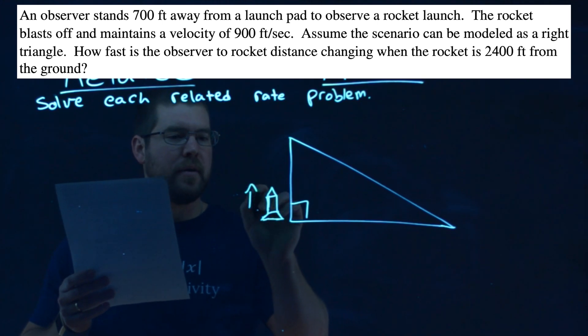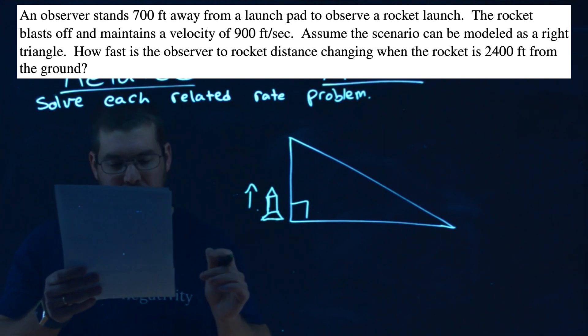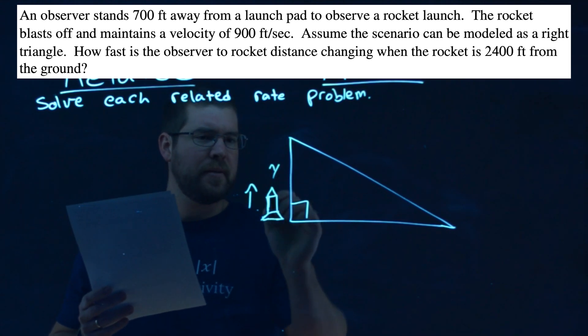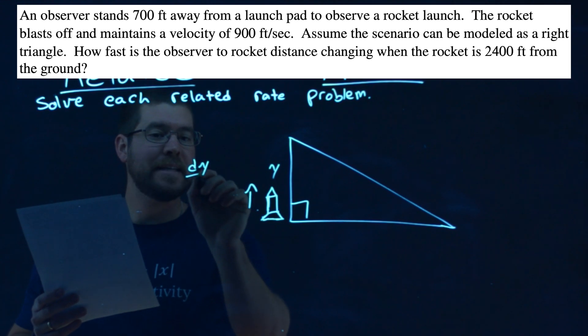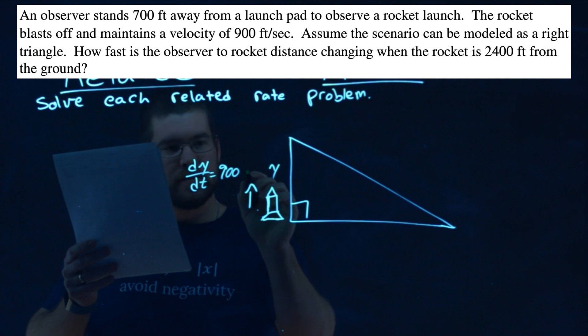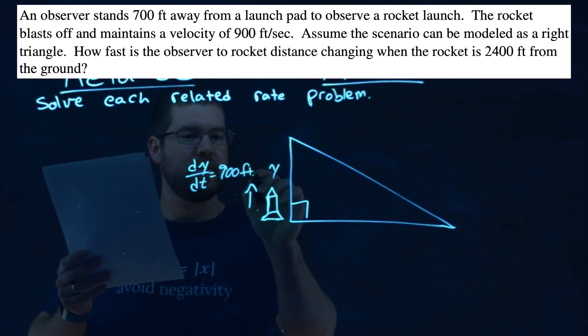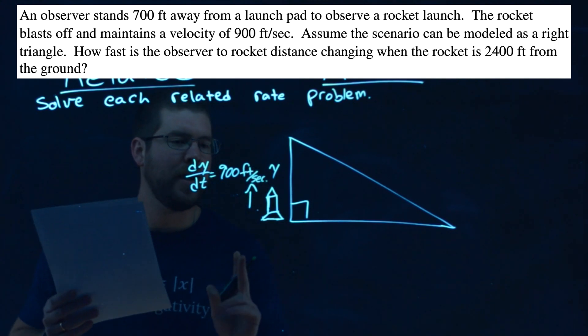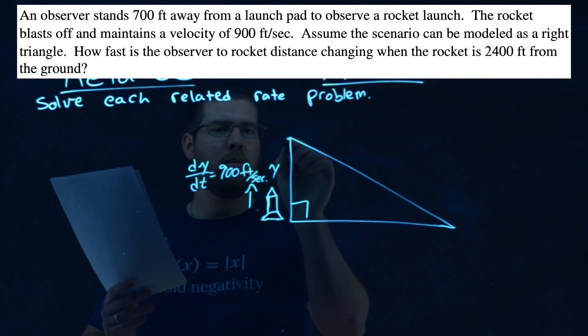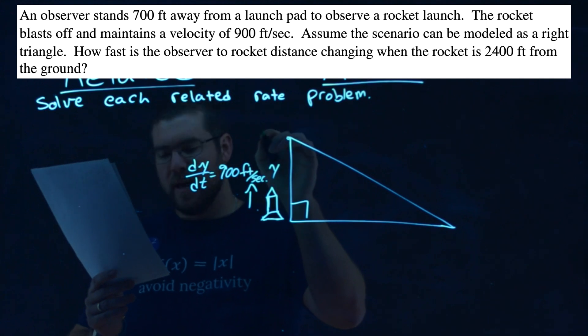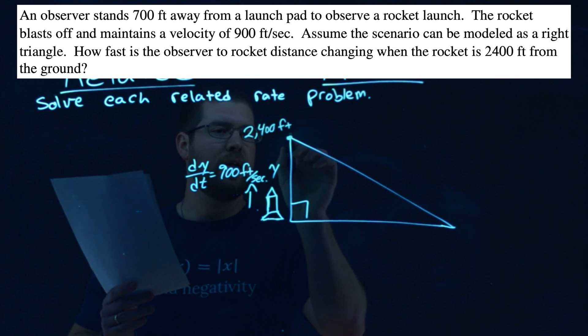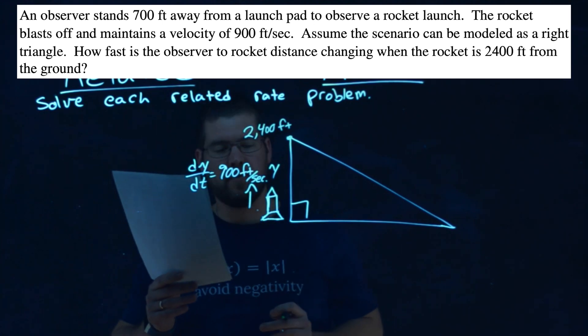The rocket is going up at a rate, they tell us, of 900 feet per second. So let's call this the Y side. And so our rate with respect to time, dY/dt, is equal to that 900 feet per second. The rate at which the rocket's going upwards. Now the overall height, the moment where this whole thing happens, is a height of 2,400 feet. That's when the moment we're talking about, when that height is 2,400 feet.